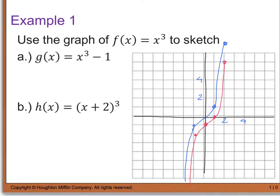For part b, it says the quantity of x plus 2 cubed, so I still have my cubic function except now I'm going to shift my graph two units to the left because it's a positive here. What was at (0, 0) moves to (-2, 0); (1, 1) moves to (-1, 1); (-1, -1) moves to (-3, -1); and (2, 8) moves to (0, 8). So you end up with something that looks like this. They all have the same shape — they're just being translated either up and down or left and right.